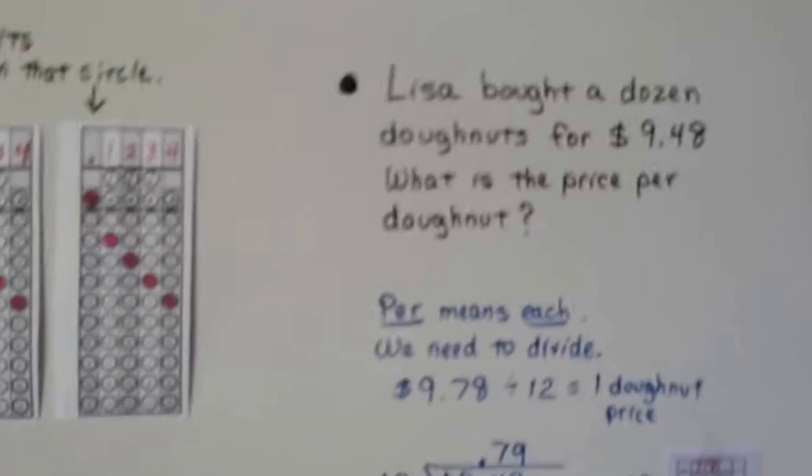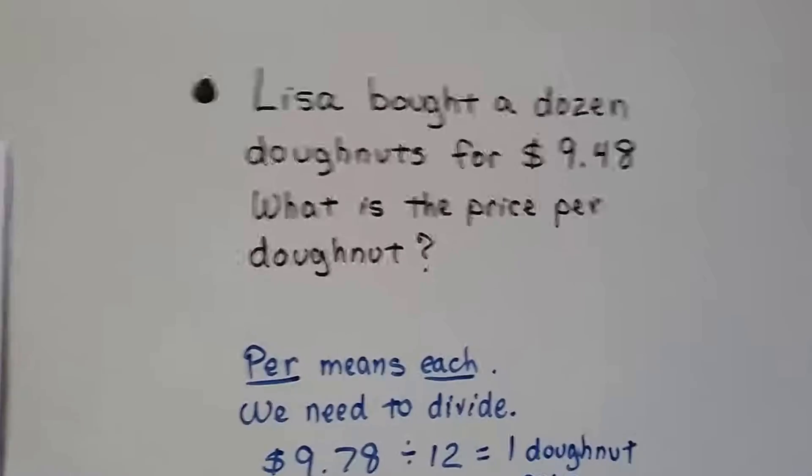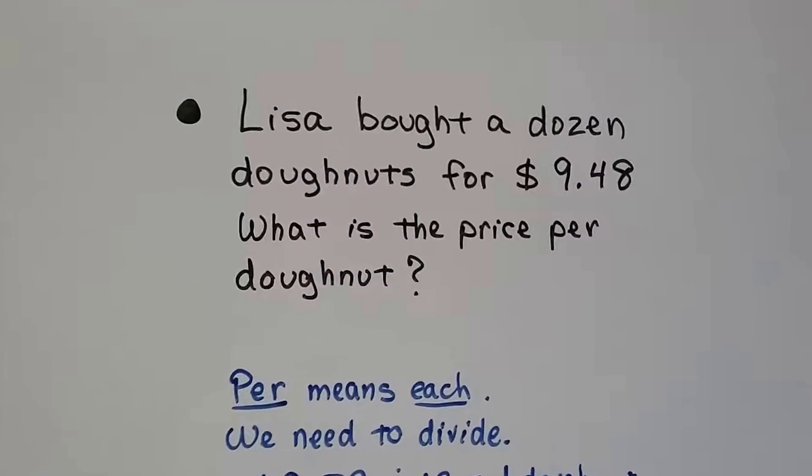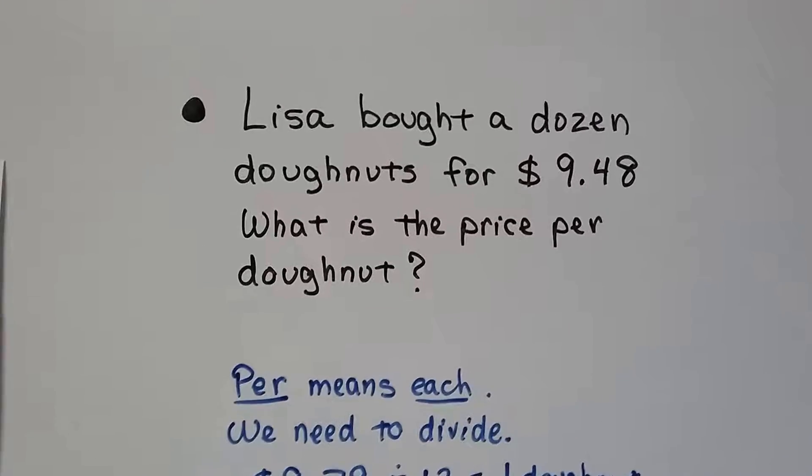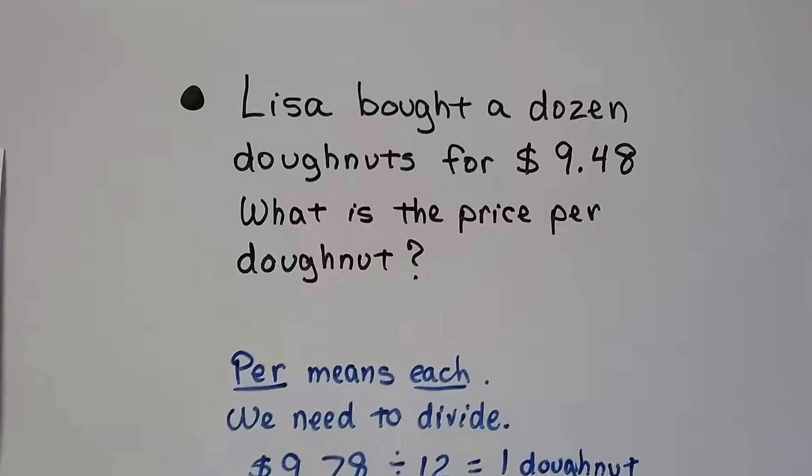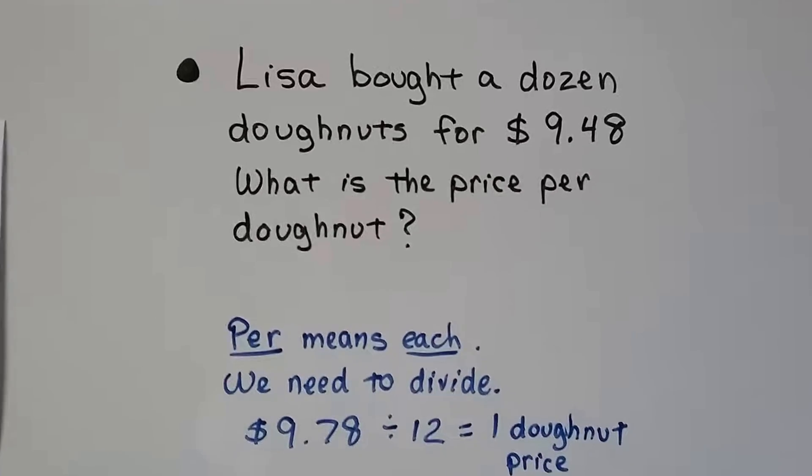Here we have an example. Lisa bought a dozen donuts for $9.48. What is the price per donut? Well, that per is telling us we need to divide. We need to find the price of one donut. It means each.